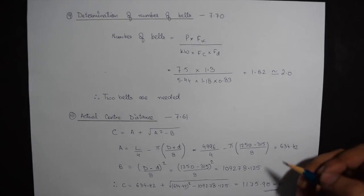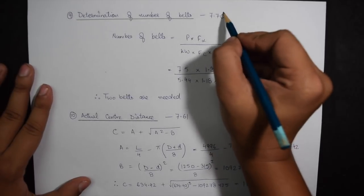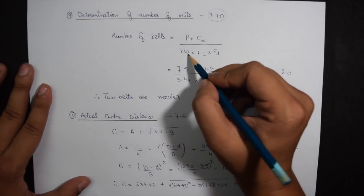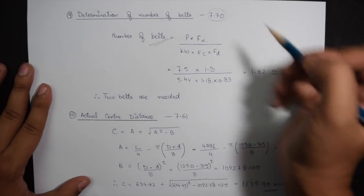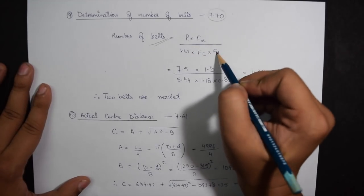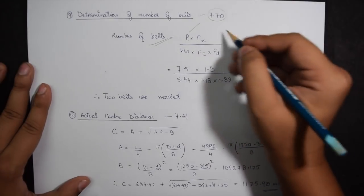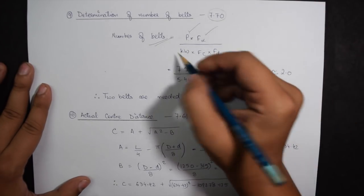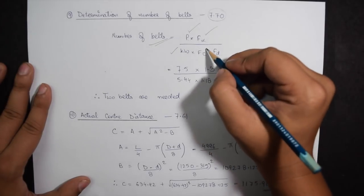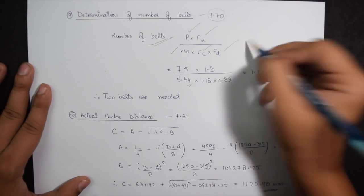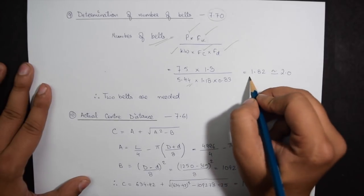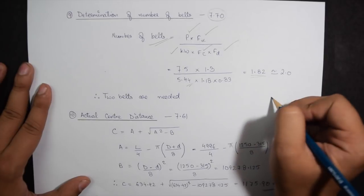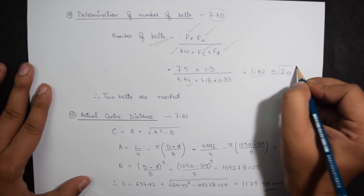For determination of number of belts we look onto page 7.70. The formula is given on the top of the page. We require five different values over here: P which was given in the question, F alpha which we calculated as 1.3, Kw which we just found out to be 5.44 kilowatt, Fc and Fd both of which we found out. So the value for number of belts is coming out to be 1.82. Rounded up we will be needing two belts.